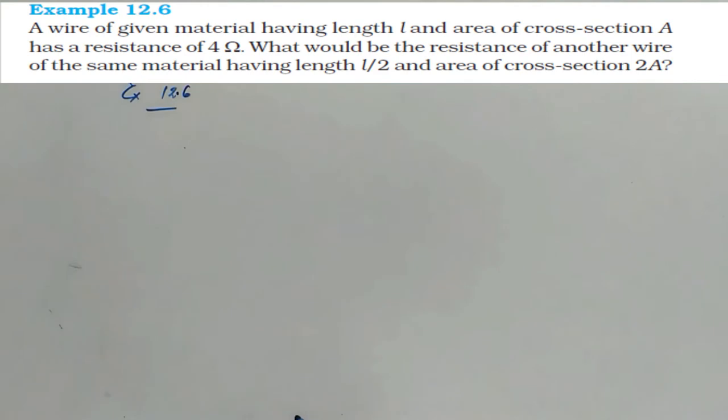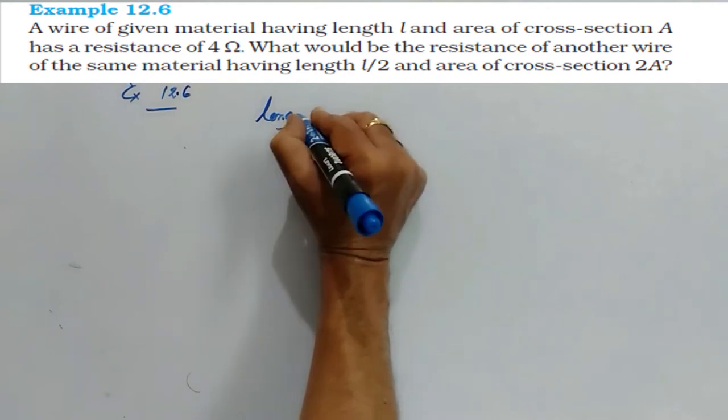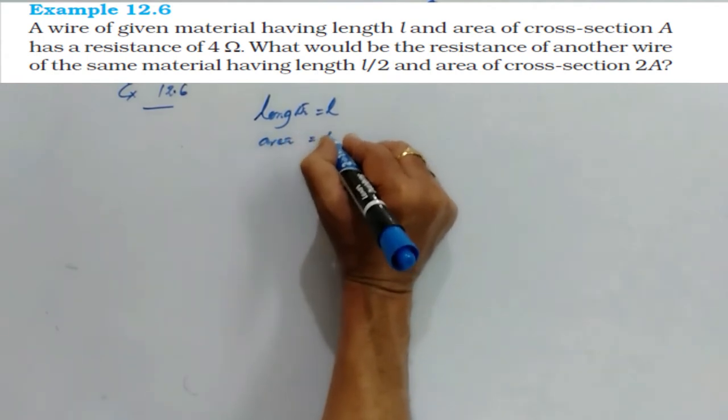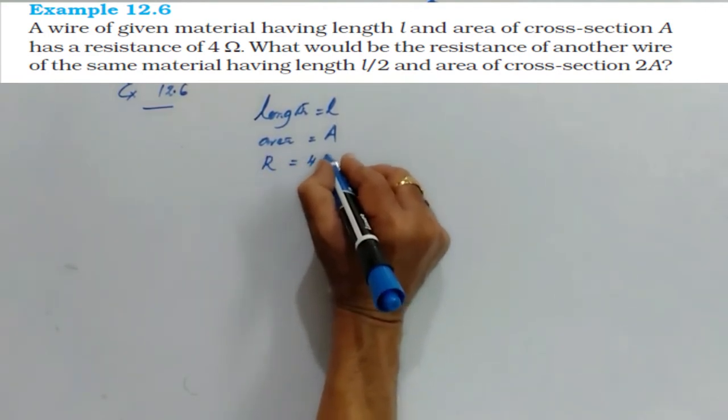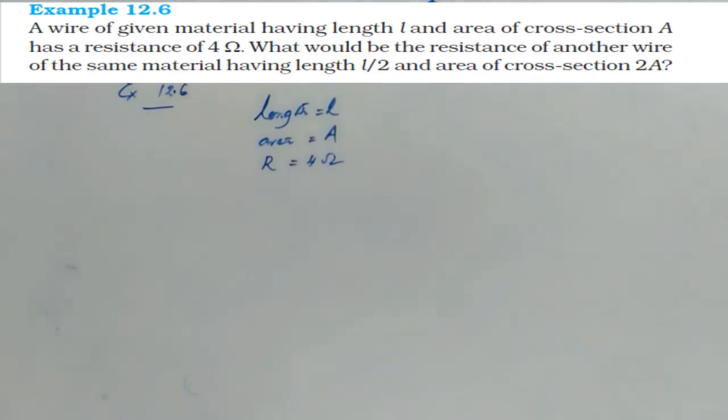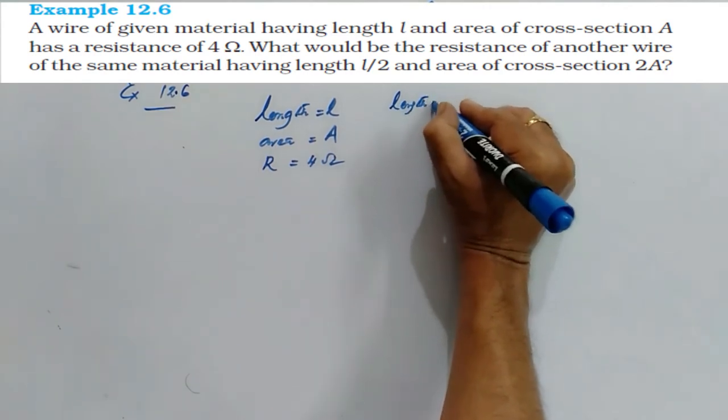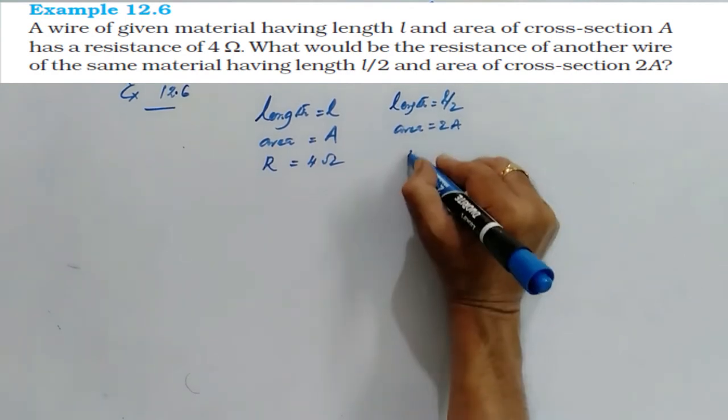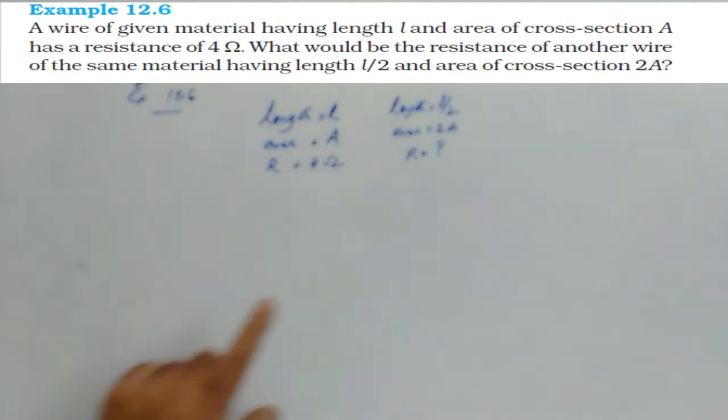In this question, a wire of given material, length L and area as A and its resistance is 4 ohm. Now it is asked, suppose if length becomes L by 2 and area becomes 2A, what happens to its resistance. And it is also given that the material is same.